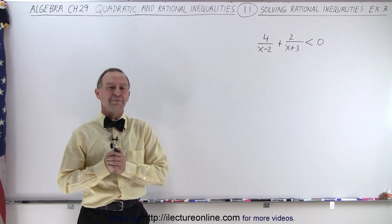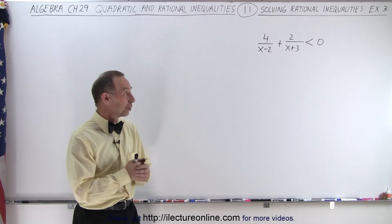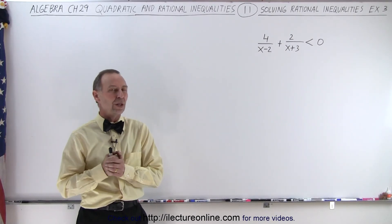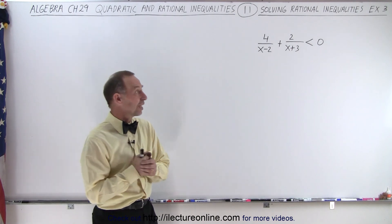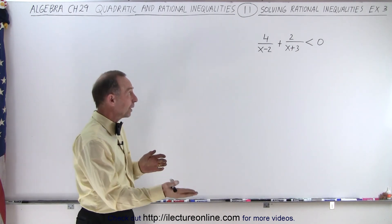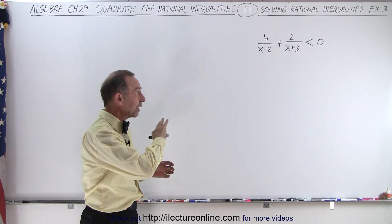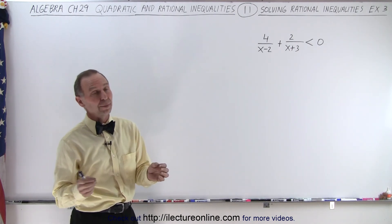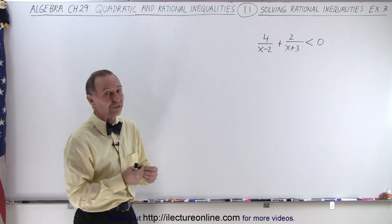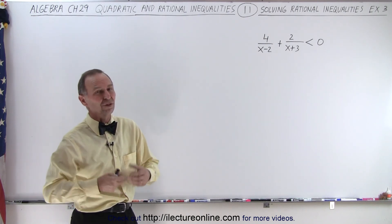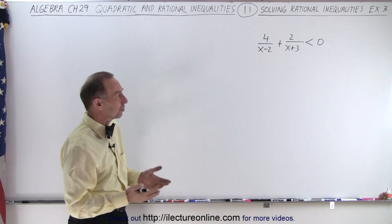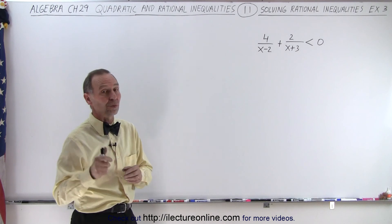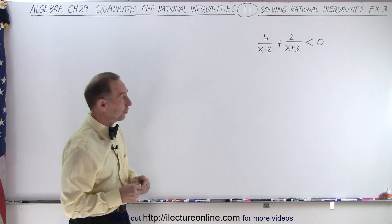Welcome to our lecture online. When we take a look at this inequality, notice that everything is already on the left side and we have a zero on the right side. The problem is on the left side we don't have a single fraction — we have the sum of two fractions, so we want to combine those into a single fraction first.